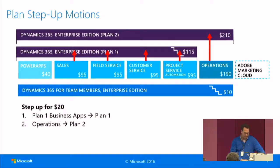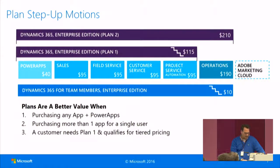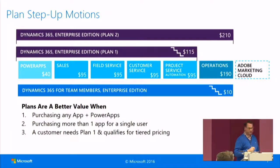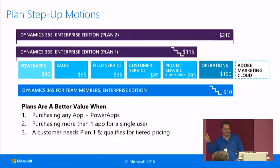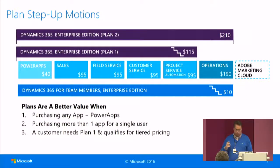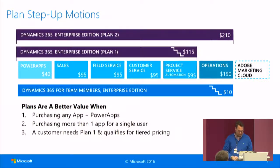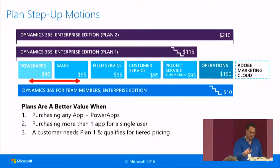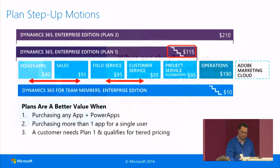You step up into Plan Two. For CRM, it's even more convincing. We have the single apps for $95, and the whole package called Plan One for $115 — so for roughly 15% more, you get everything we have on the CRM side. And if you add CRM plus AX, it's $210.